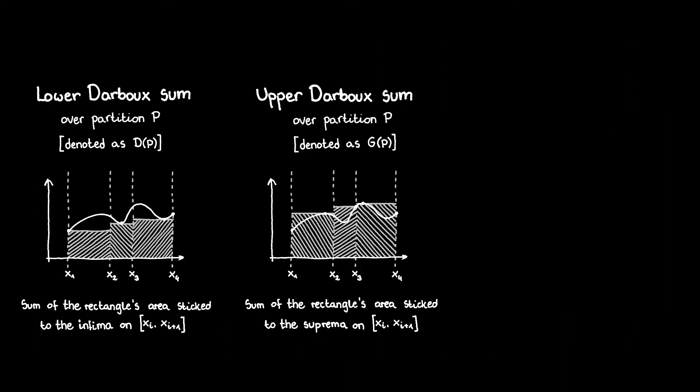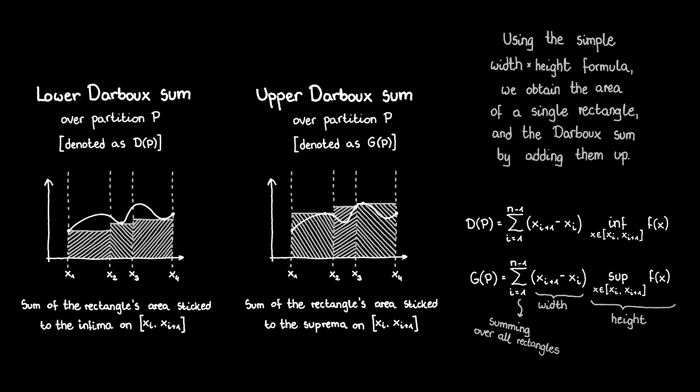This idea has its formal equivalent – lower and upper Darboux sums. The lower sum consists of the infima of the function over the small intervals times the length of those intervals. The upper sum is similar with the suprema instead of the infima. It means that we are basically using the simple formula of the surface area for each rectangle and then add them all up.